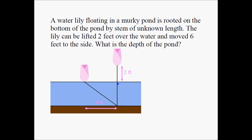The picture really helps. According to the question, when you hold the lily vertically from its point of origin, the part of the stem that's above the water is 2 feet. And when you pull it to the side, this distance is 6 feet. The picture comes with the question. We don't know the length of the stem, and we are supposed to find the depth of the pond — we are looking for that.